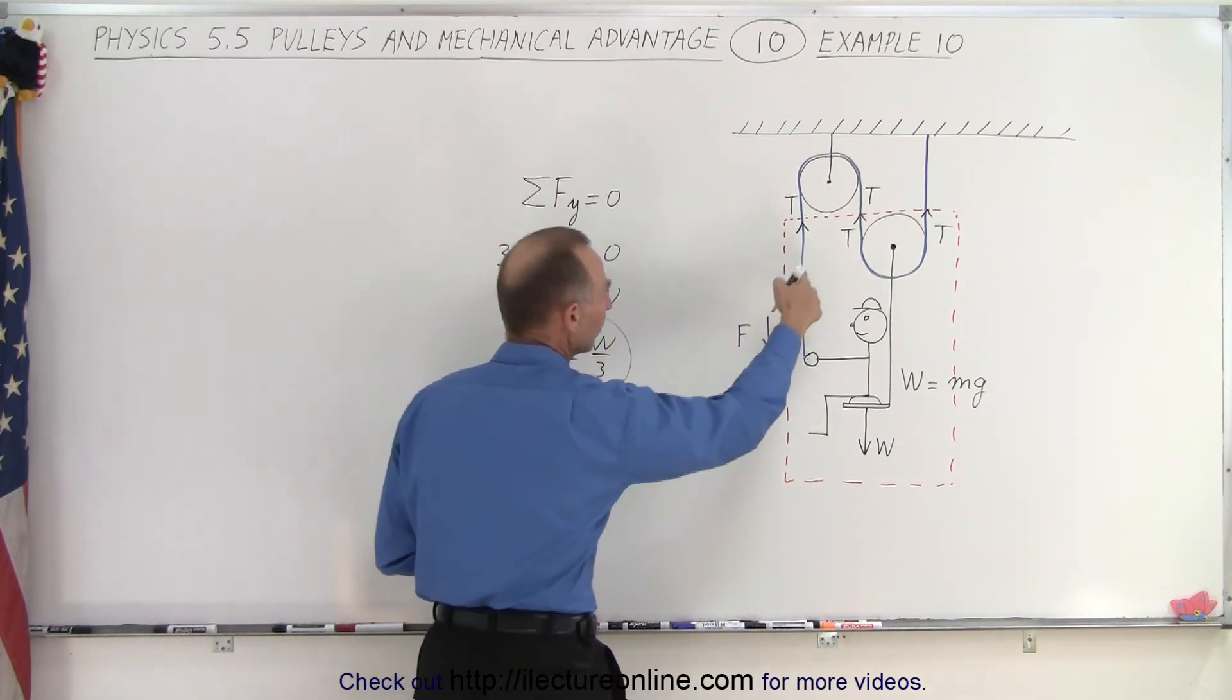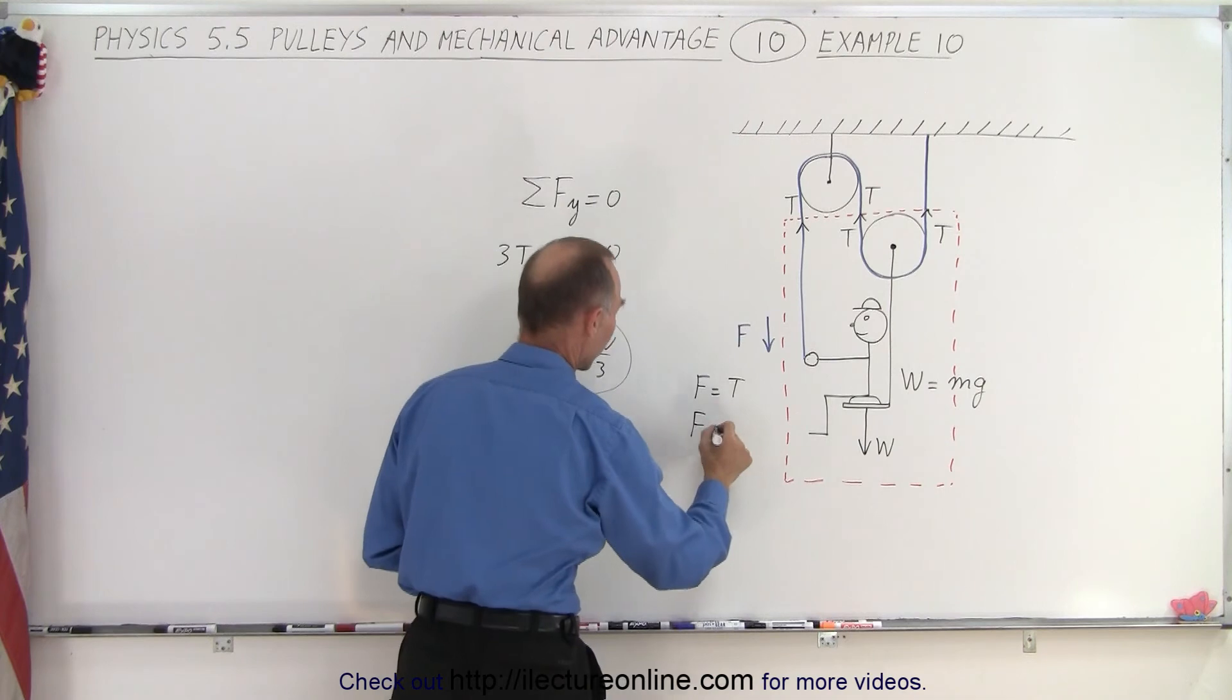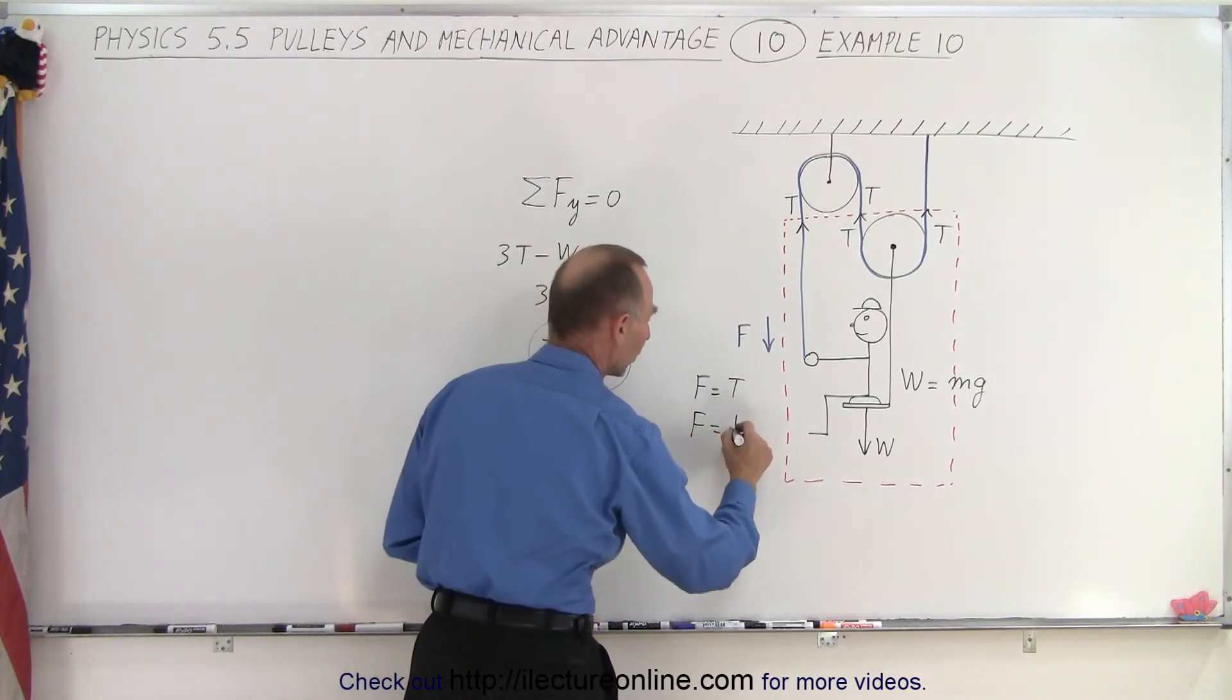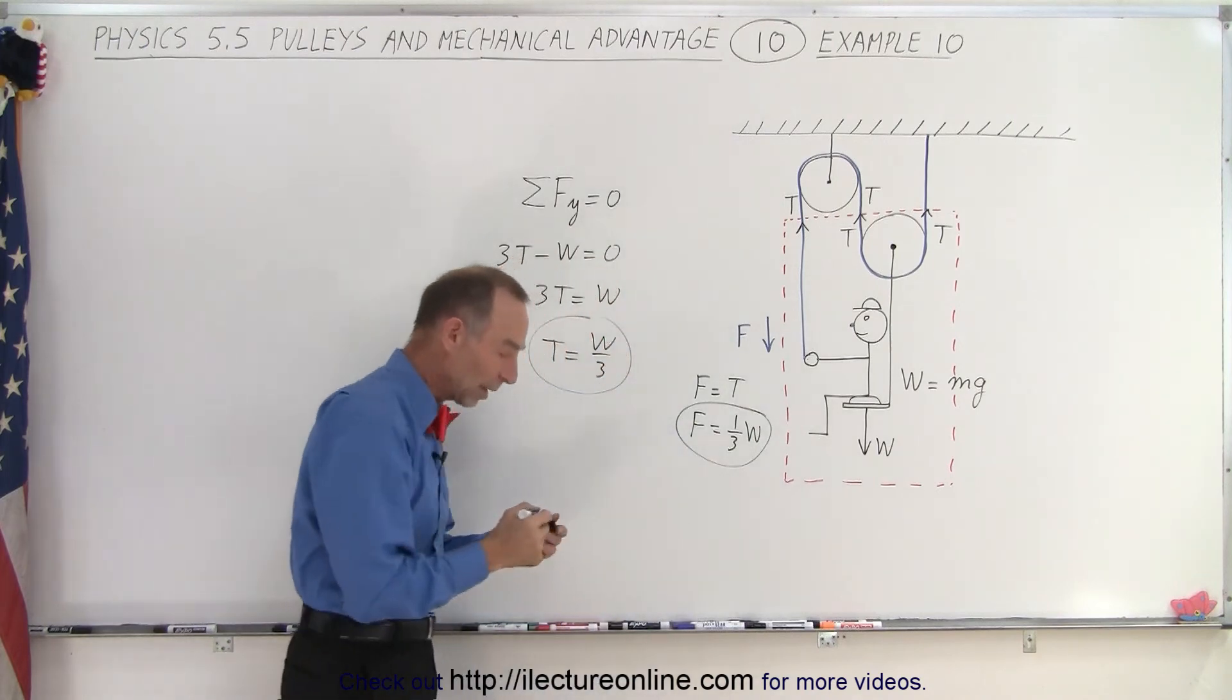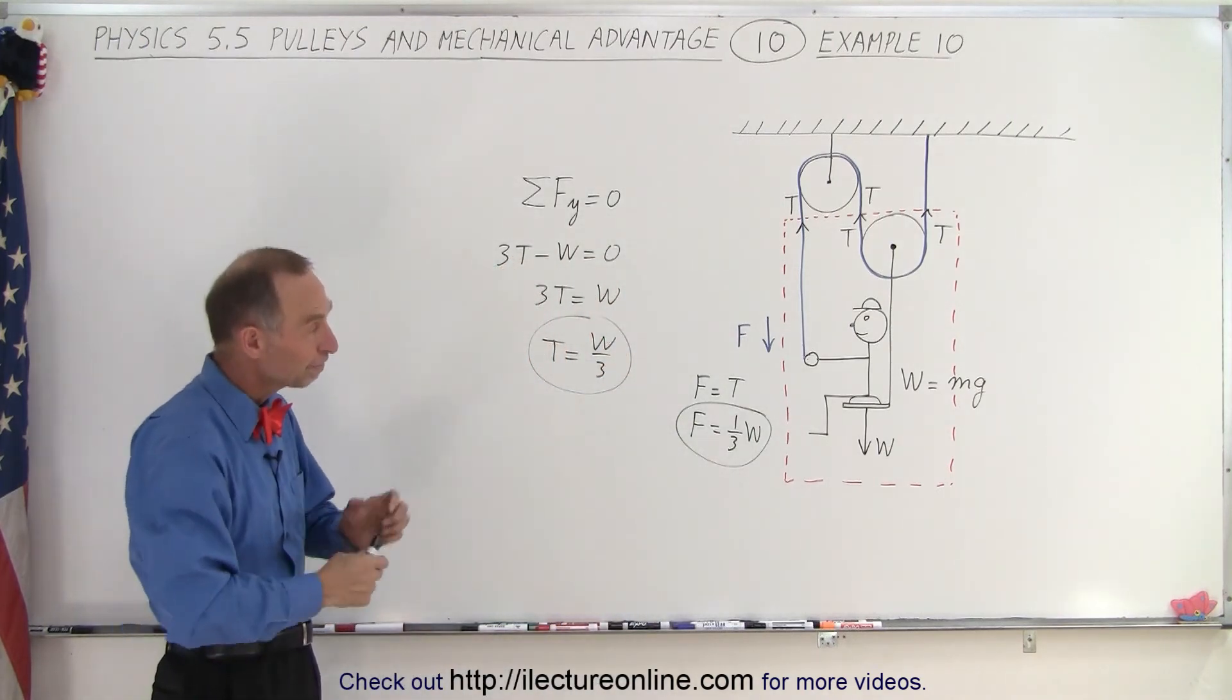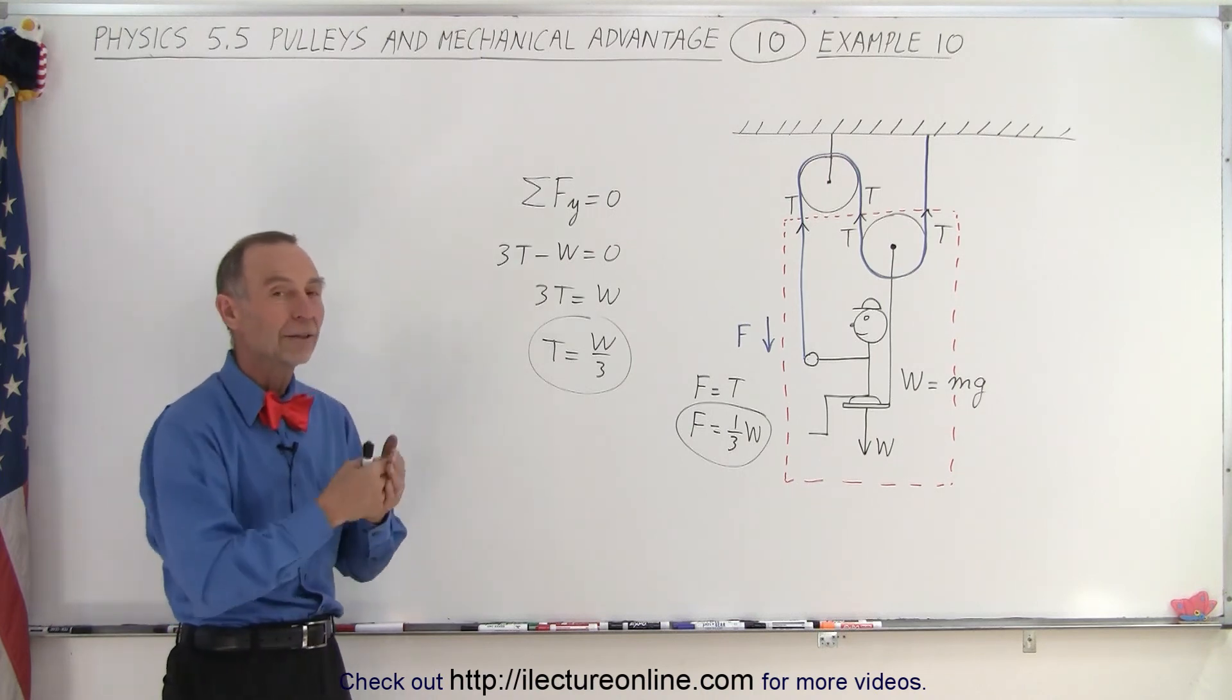And since the force here is equal to the tension, the force equals the tension, that means the force required is equal to one-third the weight of the person. So this contraption will allow someone to pull themselves up by pulling with a force equal to one-third the weight that they are.